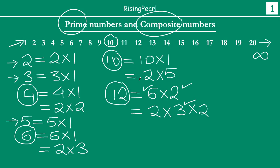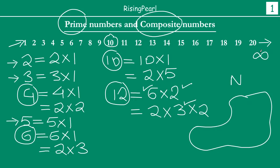If we look at all natural numbers extending to infinity, we notice there are only two types of numbers: prime numbers, which have factors only as the number itself and 1, and composite numbers. Composite numbers can be broken down into a product of prime numbers. For example, 12 can be broken down that way, as can 6 — meaning these composite numbers can be expressed as a product of primes.